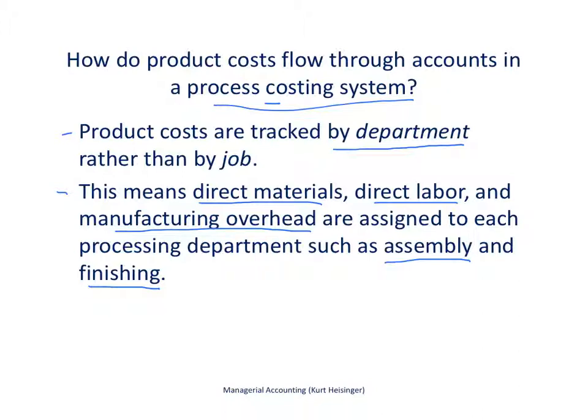We've got two departments. Imagine one department that assembles those desks — they have all the different parts and they assemble it. Then we have a department that finishes the desk, maybe painting or staining and cleaning it up. That would be the finishing department. We're going to use these two departments as we talk about how a process costing system works.